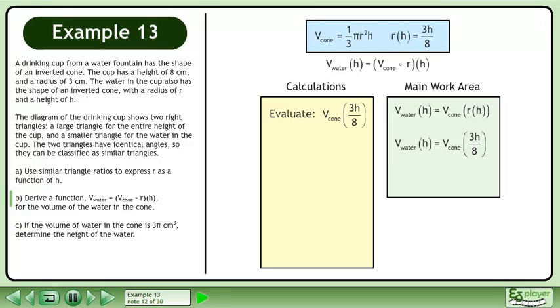Before we can continue, we need to evaluate v of 3h over 8. We know the volume of a cone is v equals 1 over 3 pi r squared h. Replace r with 3h over 8.